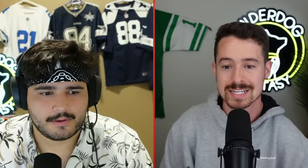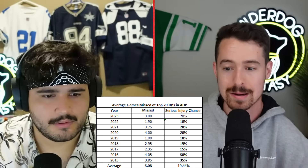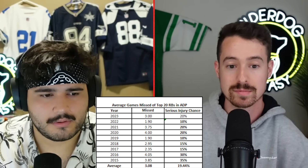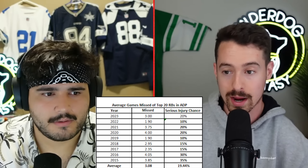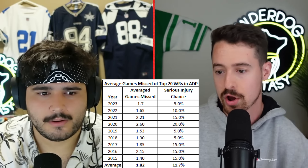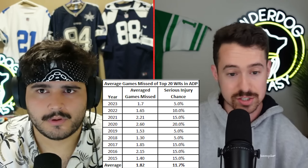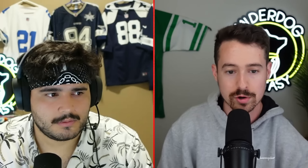To prove that running backs get injured more than other positions: looking at the top 20 running backs in ADP since 2015, the average games missed is 3.08, with a 19.44% chance of suffering a serious injury — meaning they missed six or more games. Compared to wide receivers, who miss only 1.82 games on average with an 11.7% chance of a serious injury. In zero strategy, you're going to forego that risk altogether by drafting none through the first seven to eight rounds.